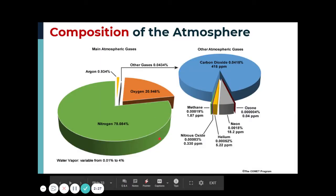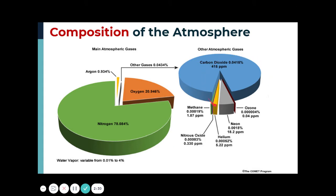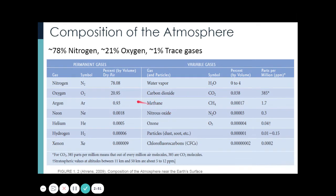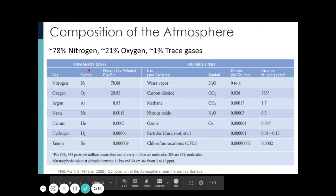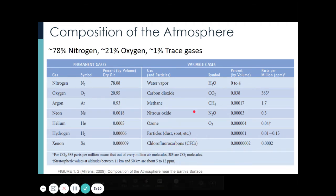These greenhouse gases are actually just trace gases in the atmosphere. Most of our atmosphere is made up of nitrogen, oxygen, and some argon — we call these permanent gases. They are constant in nature and their changes take about 100 years. While the variable gases are very variable, spatially and temporally — in time and space.